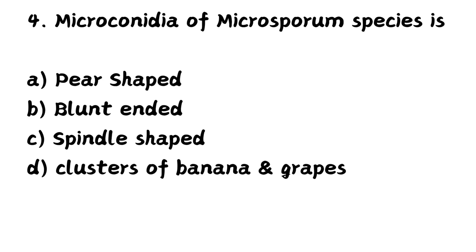Question number four: Microconidia of Microsporum species is — Option A: pear shaped, Option B: blunt ended, Option C: spindle shaped, Option D: clusters of banana and grapes. Microconidia of Microsporum species appear spindle shaped. The right answer is Option C — spindle shaped.